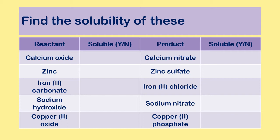Here is an exercise using the data booklet — pause the video to look up each compound. The answers are: calcium oxide is soluble, calcium nitrate is soluble, zinc is not soluble (it's a metal and doesn't dissolve), zinc sulfate is soluble, iron(II) carbonate is insoluble, iron(II) chloride is soluble, sodium hydroxide is soluble, sodium nitrate is soluble, copper(II) oxide is not soluble, and copper(II) phosphate is also insoluble.